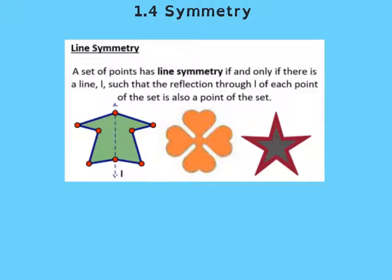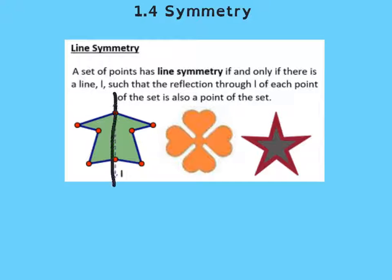Symmetry is something that you and I have been dealing with for a long time in school, but also just our bodies. Our bodies are built very symmetric in their design, and that kind of symmetry is line symmetry or reflectional symmetry. It's the kind of symmetry where if you had a line, everything on one side would map onto the other, and that makes it symmetrical.